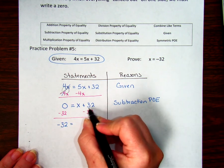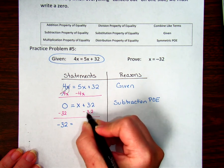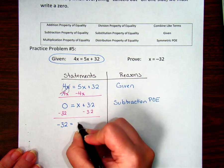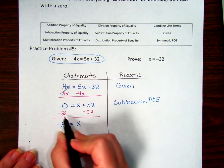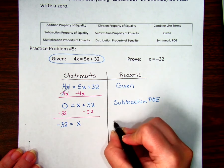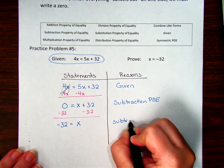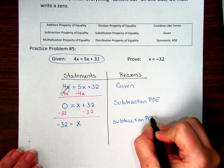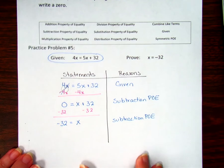Remember, this is really 0. 32 minus 32 is 0, so X plus 0 is just X. And what did I do? I subtracted on both sides, so subtraction property of equality.